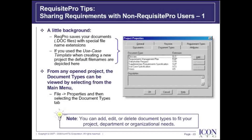Envision document types are saved with a .VIS extension. From any open project, the document types can be viewed by selecting the project's name in the Explorer — in our case, the New Age Media Portal — then from the main menu select File, Properties, and select the Document Types tab. Please note, you can add, edit, or delete document types to fit your project, department, or organizational needs.